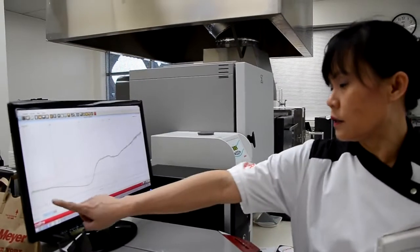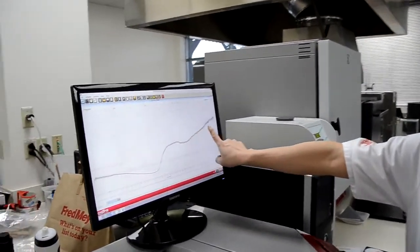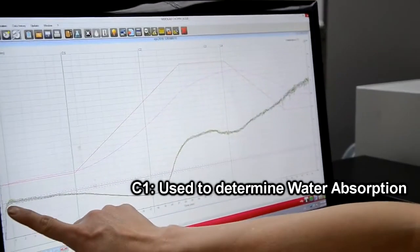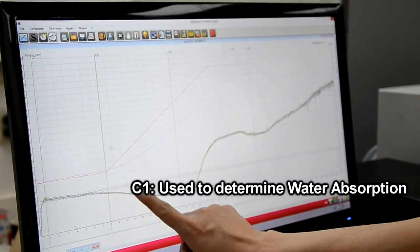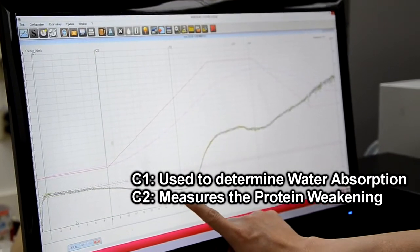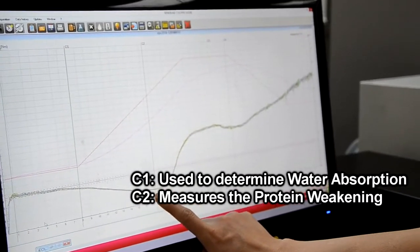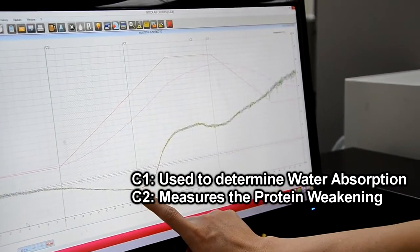Here you can see that the test results has ended. You have C1 here, which is used to determine water absorption. C2 here, which measures the protein weakening as a function of mechanical work and temperature.